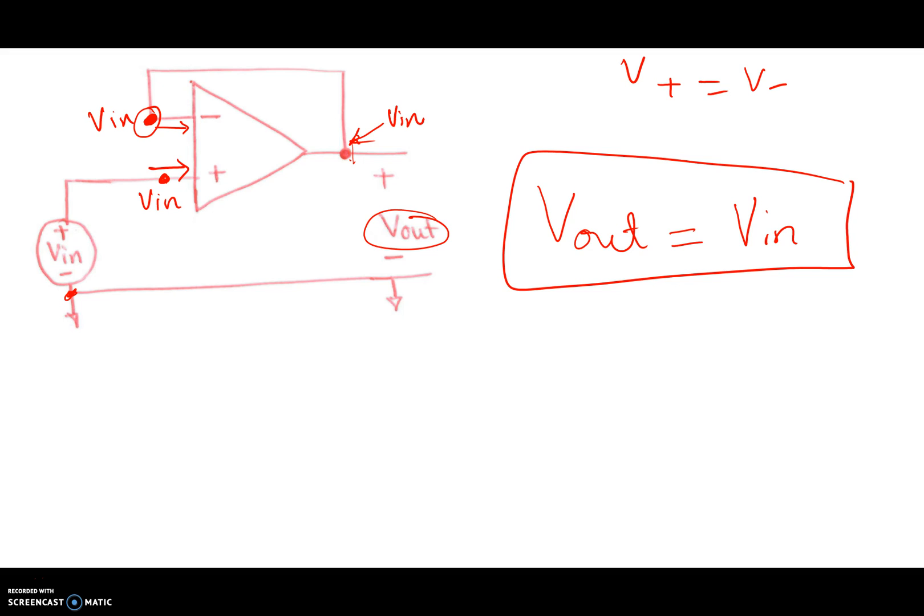This particular topology is called a voltage follower. It is used to isolate a circuit or used as a buffer.